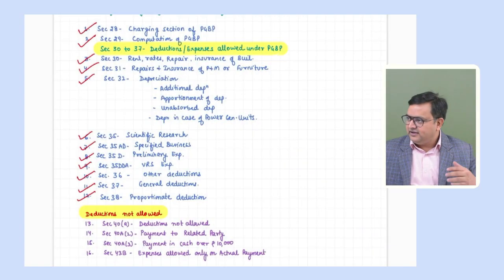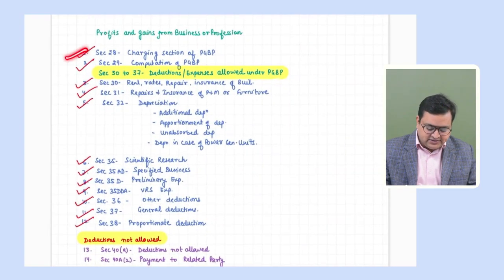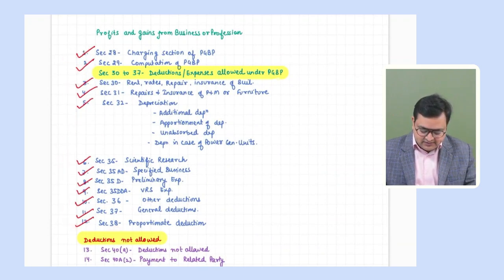In the last lecture we were doing PGBP revision and we have already completed the deductions part from Section 30 to 37 — deductions which are allowed from PGBP. We have already completed Section 38 also; it was a small section about proportionate deduction for expenses partly for business and partly for other purposes. Looking at the index, we have already covered Section 28 (charging section), 29 (computation), and Sections 30 to 38.